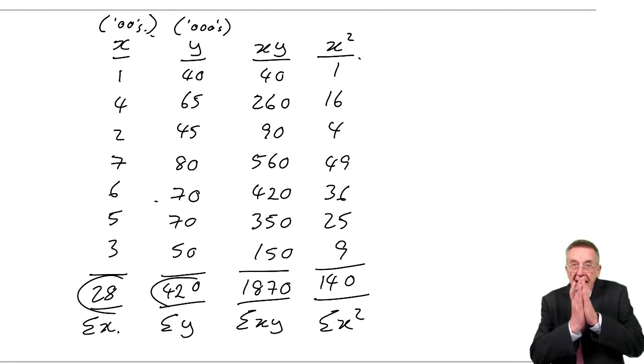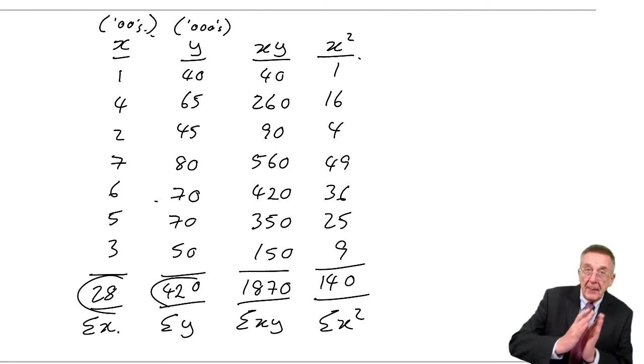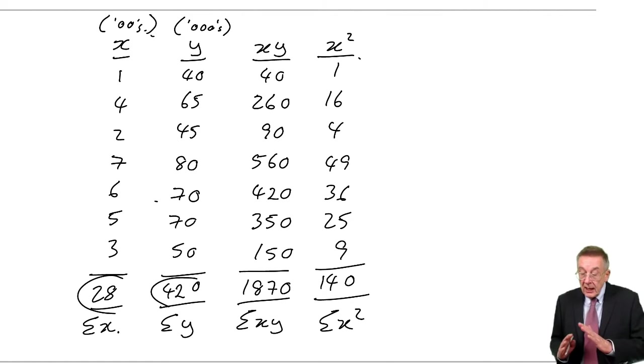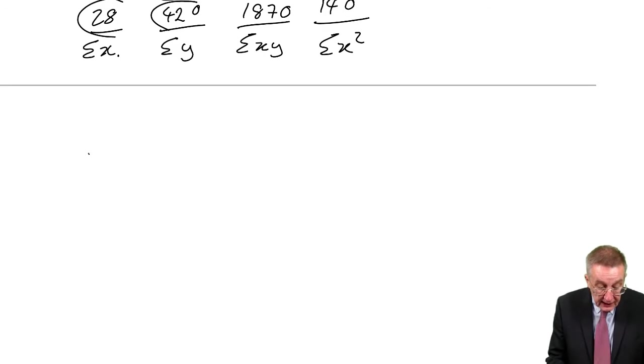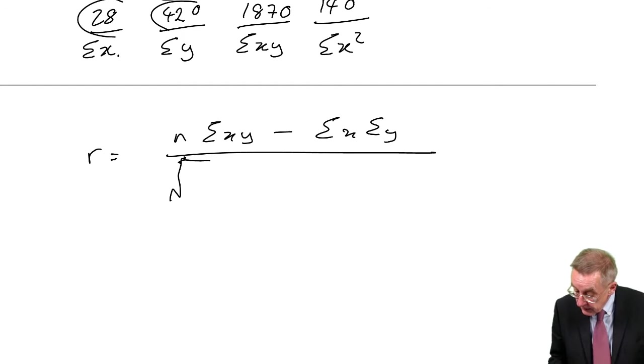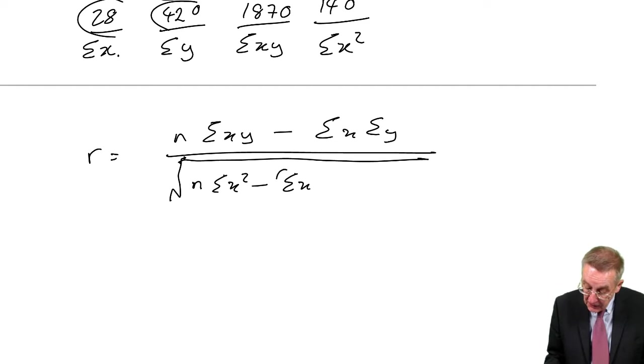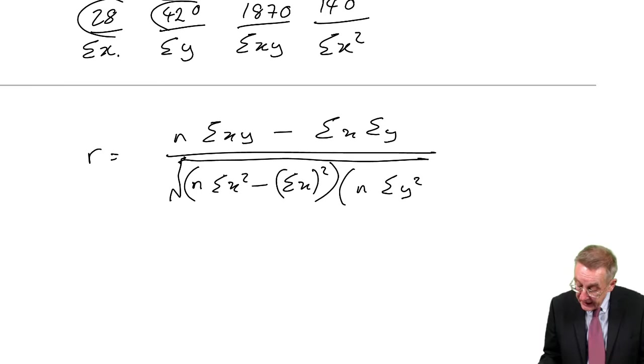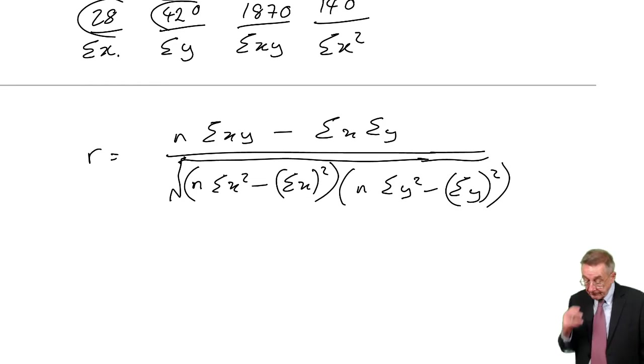Correlation means how well do they match together? If it's perfect match, it'd be linear. If it's not perfect, it wouldn't be. I'll explain how we interpret the figure afterwards. But the coefficient of correlation, again, you've got the formula on the formula sheet. R equals n times sigma xy minus sigma x times sigma y, divided by the square root of n times sigma x squared minus sigma x all squared, times n times sigma y squared minus sigma y all squared. Which looks awful. It's not actually as bad as it looks, but let's do it.